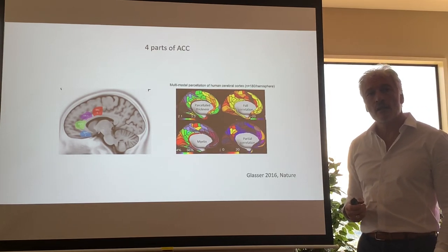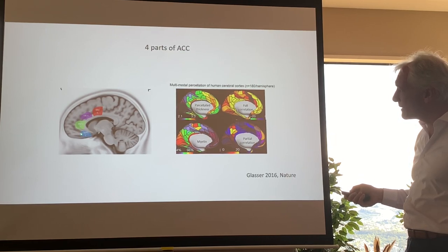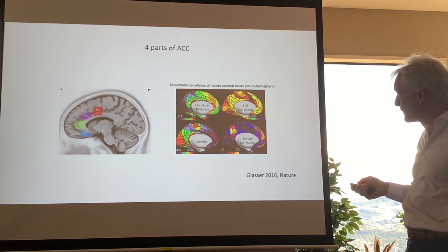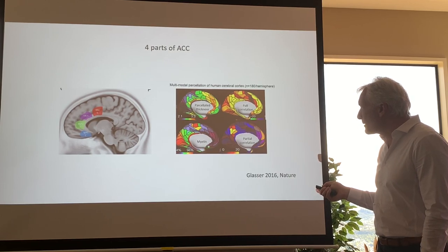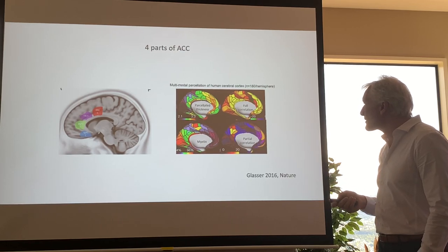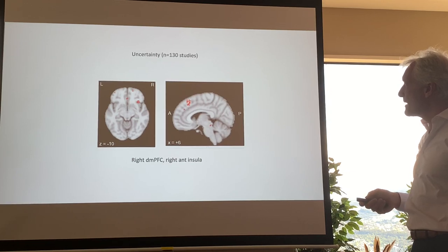The anterior cingulate complex — Brodmann area 24 — is large and consists of at least four parts, confirmed by a paper published in Nature by Glasser, which based on thickness, connectivity, and myelin concentration identifies four areas: the subgenual, pre-genual, rostral, and dorsal parts of the anterior cingulate. Uncertainty involves the dorsal medial prefrontal cortex extending into the rostral part of the anterior cingulate and the right anterior insula.